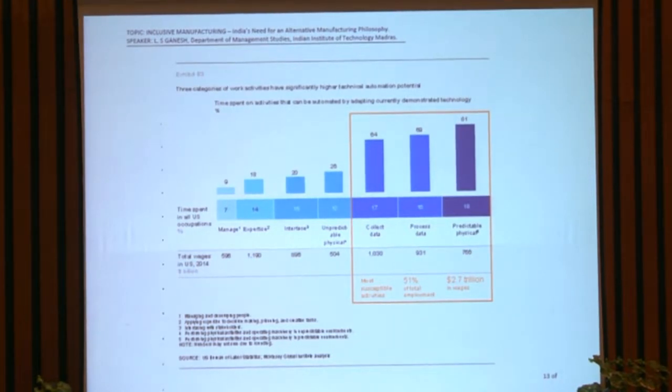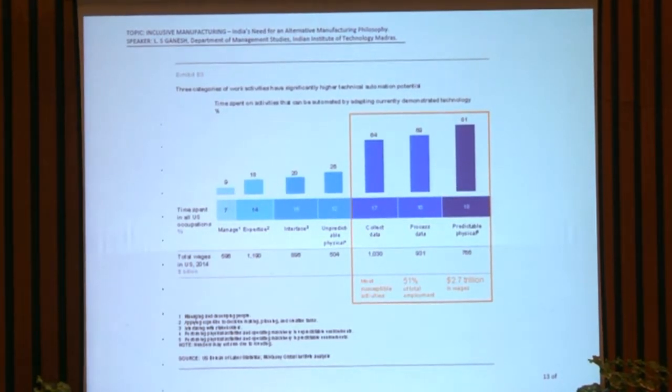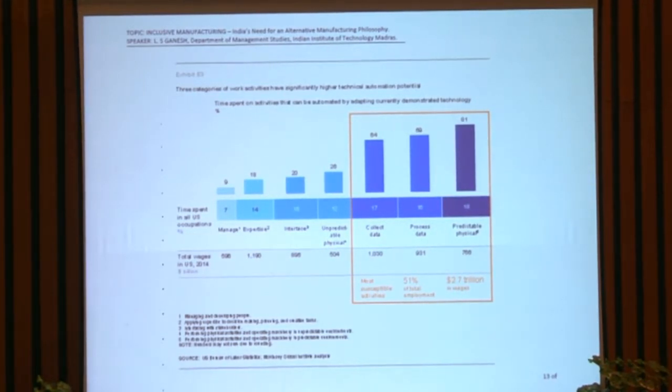This graph shows which categories of work activities have the highest technical automation potential. The rightmost categories are: collect data, process data, and physical predictable jobs — these are most susceptible to automation.